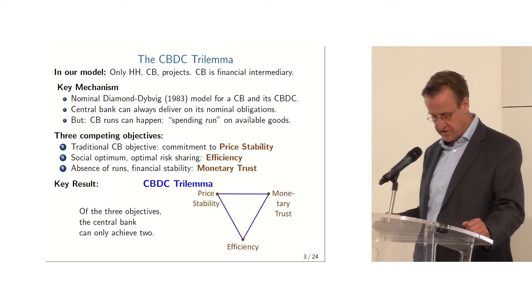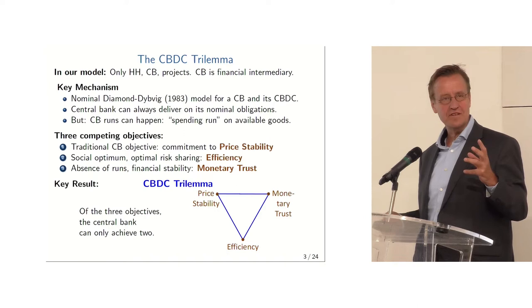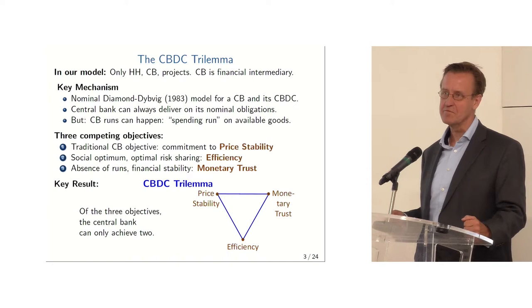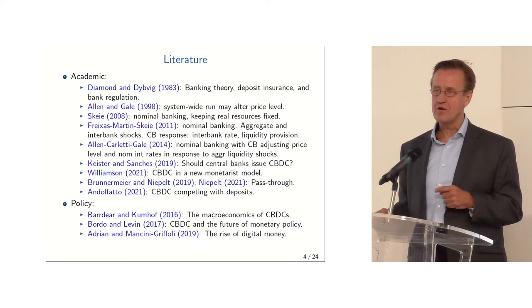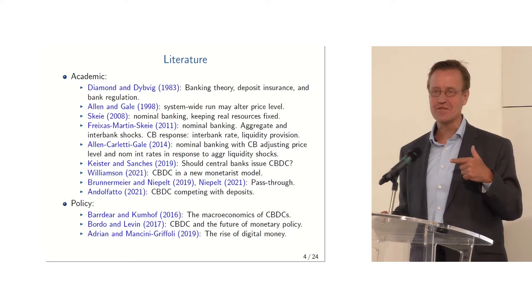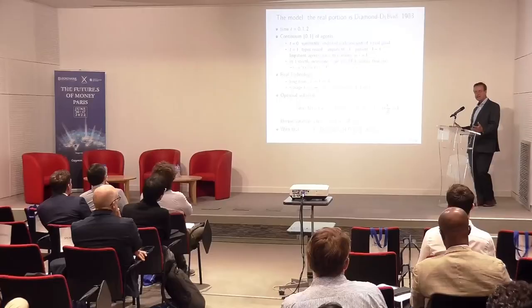Our key result is that we're going to have a CBDC trilemma. Of the three objectives — price stability, monetary trust, and efficiency — the central bank can only achieve two of them. But there's a bit of a light at the end of the tunnel: these resolutions are more interesting. Maybe they're about CBDC design. Here's my literature slide — hopelessly outdated, and I see lots of people in the audience I'm insulting with this literature slide — so I better just move on.